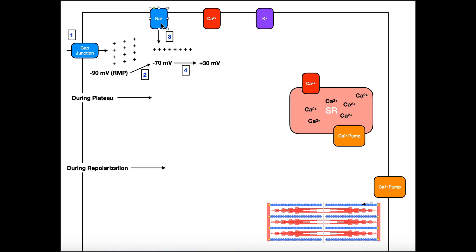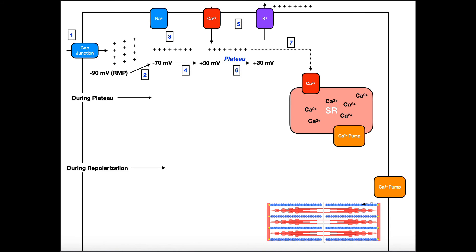This sodium channel right here won't open until the membrane potential is negative 70. Now that we have positive ions that have raised the membrane potential to negative 70, that allows this sodium channel to open and allow some sodium ions in. That's a rapid depolarization because in a very short amount of time, it's going to raise the membrane potential from negative 70 to positive 30 millivolts. Just like this sodium channel wouldn't open until negative 70, this calcium channel right here won't open until the membrane potential is about positive 30. Our membrane potential is now positive 30, so this calcium channel will now open.